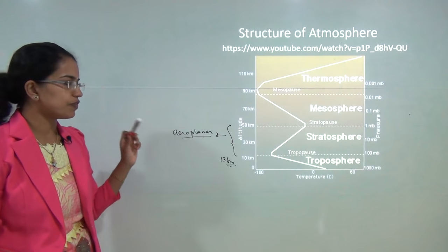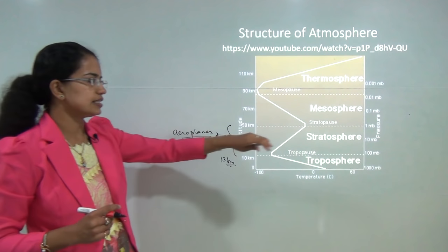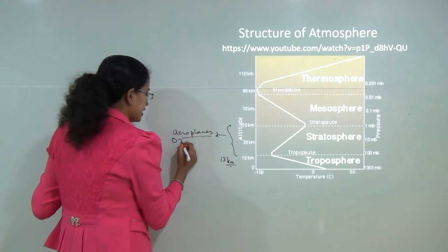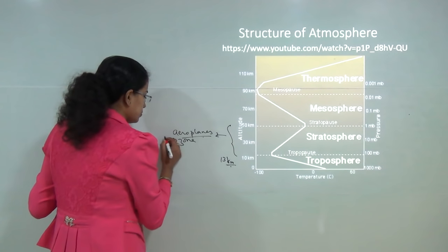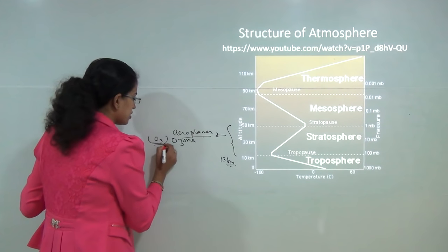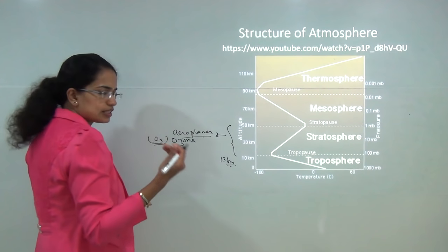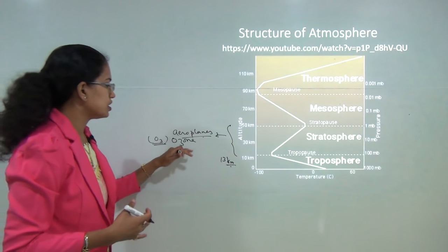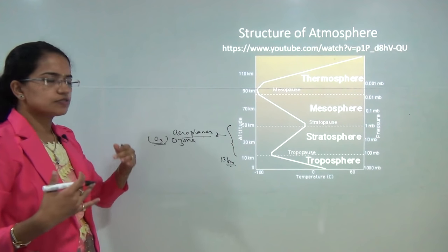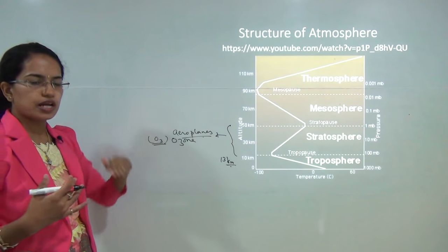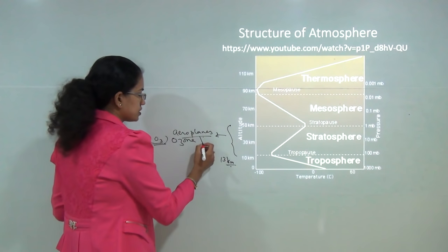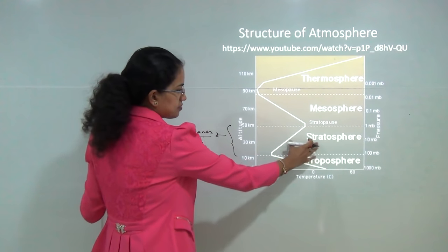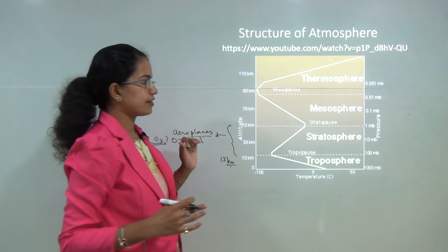It is in the stratosphere that you have the ozone layer. The ozone layer is O3 — oxygen is O2 and ozone is O3. This ozone protects us from the harmful ultraviolet rays that come onto the surface of the earth. So the ozone layer is present in the stratosphere.